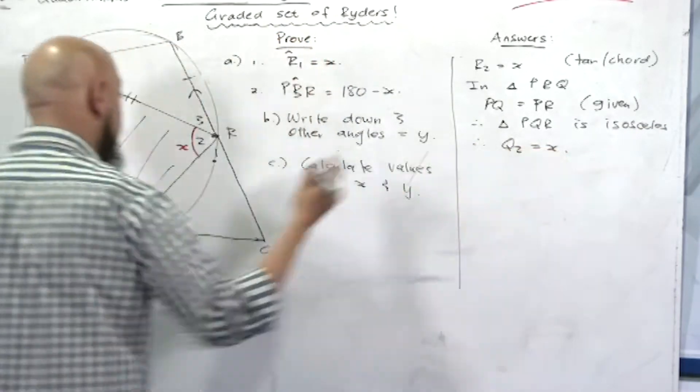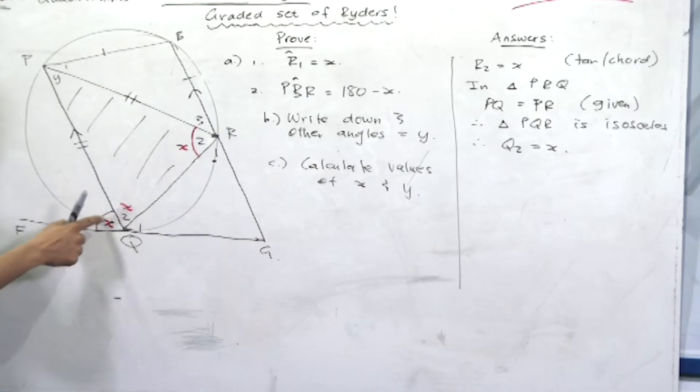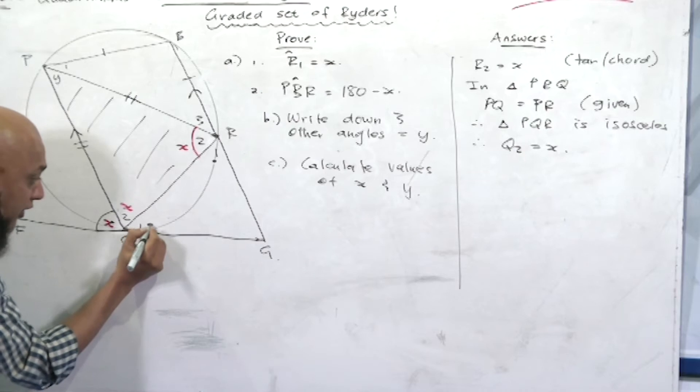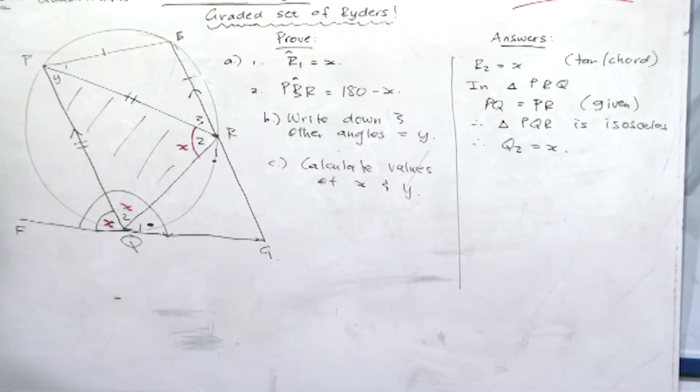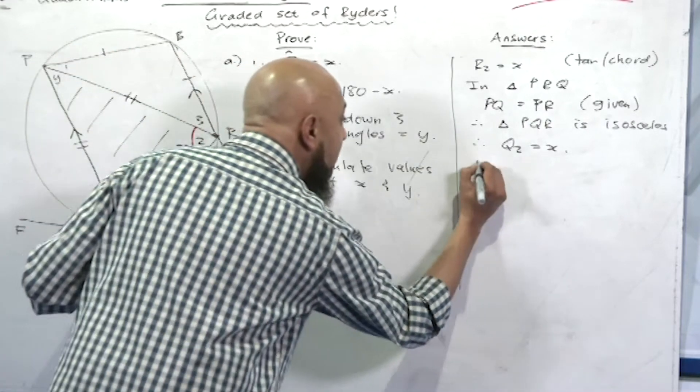So if that was equal to x, we got tangent-chord theorem, isosceles triangle, we got q2 equal to x. Therefore q1 is equal to how much? Guys, we know angles on a straight line add up to how much? 180 degrees.